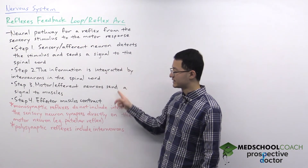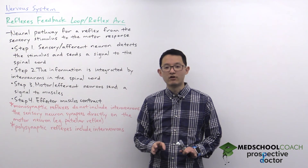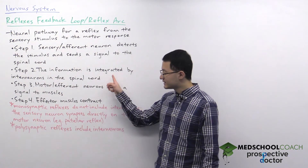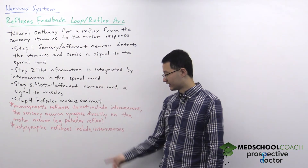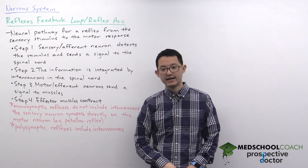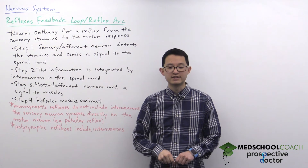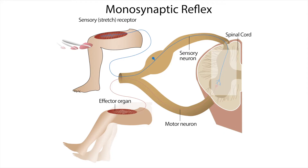Another important point is that not all reflexes involve all four steps. In particular, the interneuron step is not included in all reflexes. A good example is the patellar reflex, which is an example of a monosynaptic reflex. As you can see in this diagram, the sensory neuron detects the stretch and synapses directly on the motor neuron, which then elicits the muscle contraction. It involves one synapse between the sensory neuron and the motor neuron, which is why it's called a monosynaptic reflex.